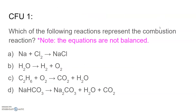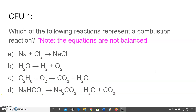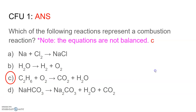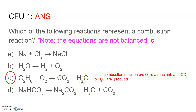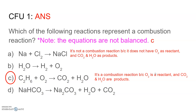Now that we've talked about how to define and identify a combustion reaction, we're going to try our first CFU. Which of the following reactions represent a combustion reaction? Pause the video now — when you press play again, the answer will be revealed. Remember, combustion reactions should have O2 as a reactant and CO2 and H2O as products. The answer is choice C — it's a combustion reaction because we have O2 as a reactant and CO2 and H2O as our products. Choice A doesn't have O2 as a reactant and doesn't have CO2 and H2O as products, so it's not combustion.